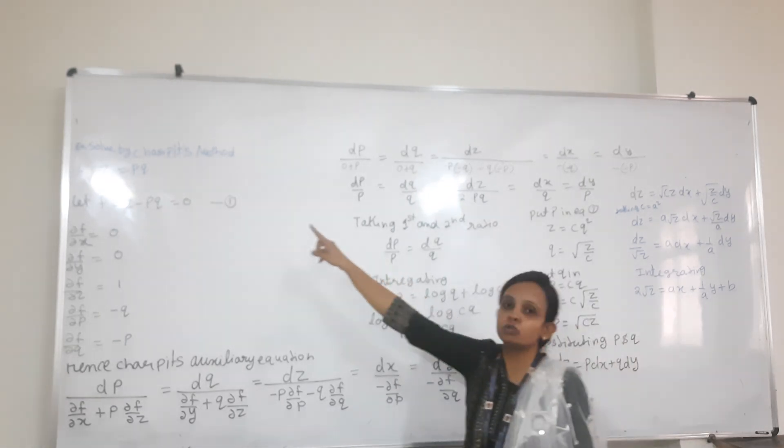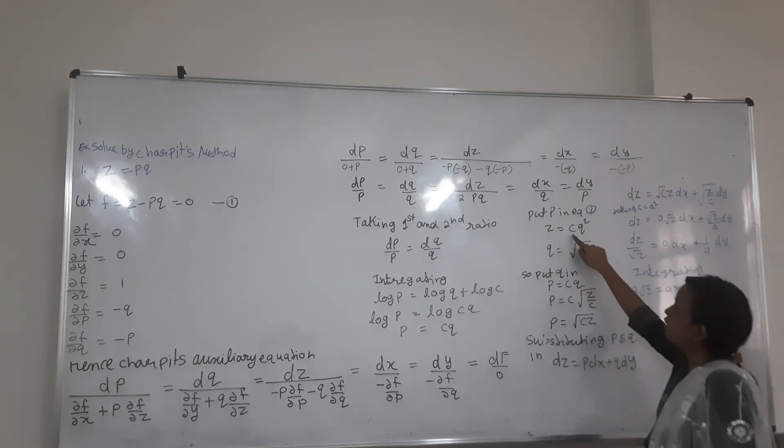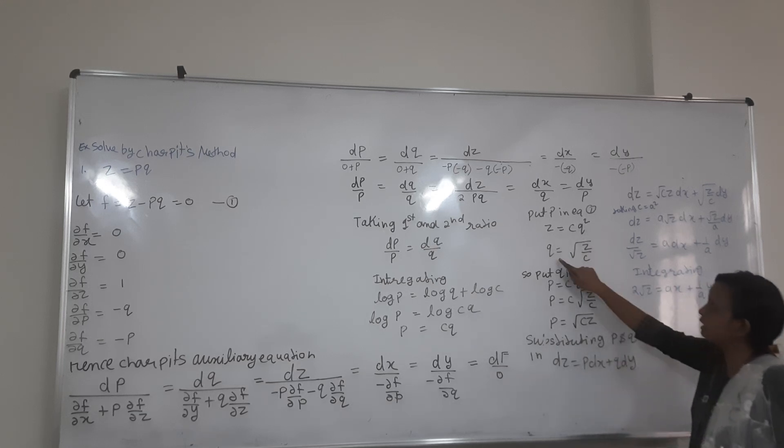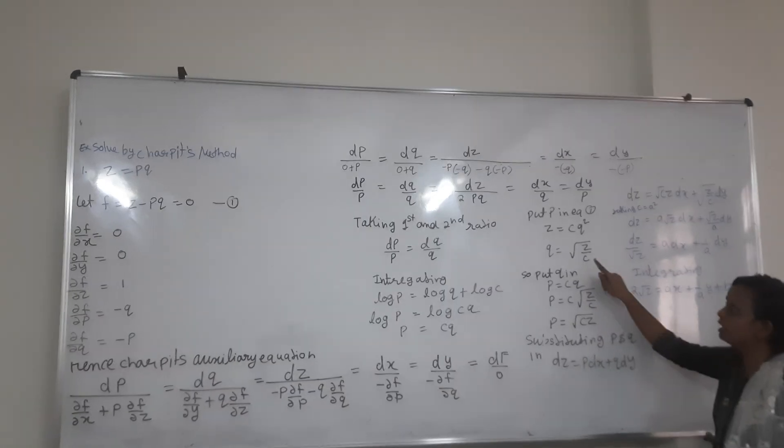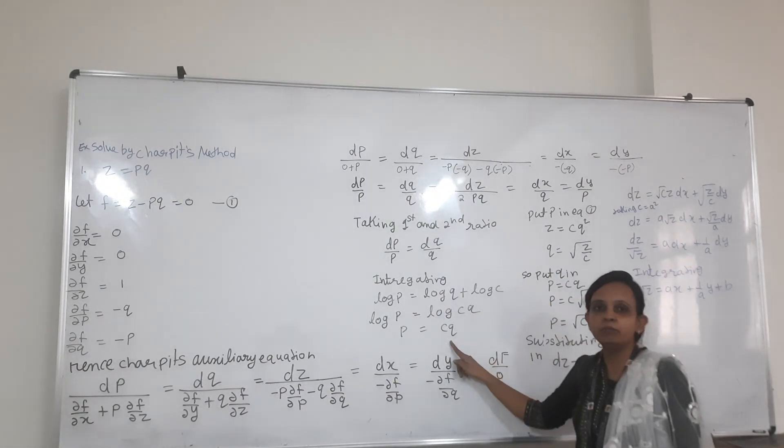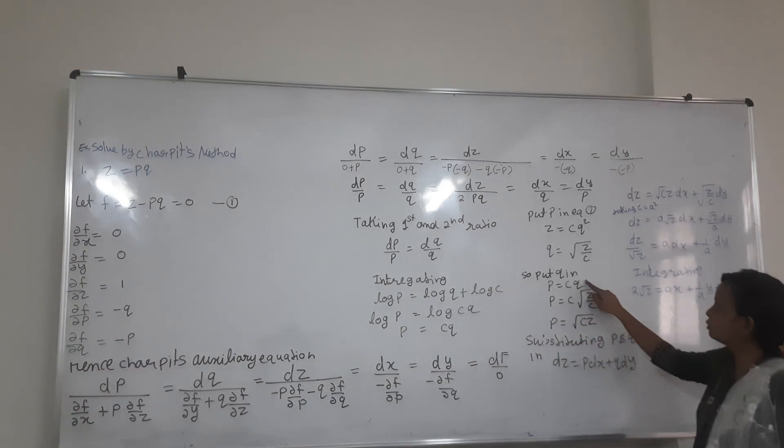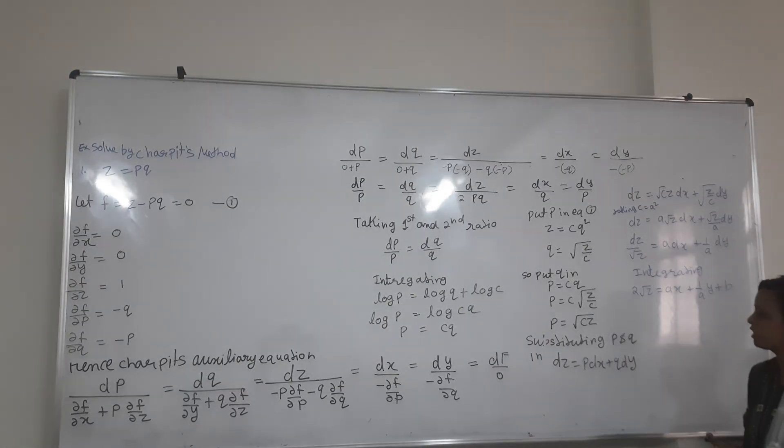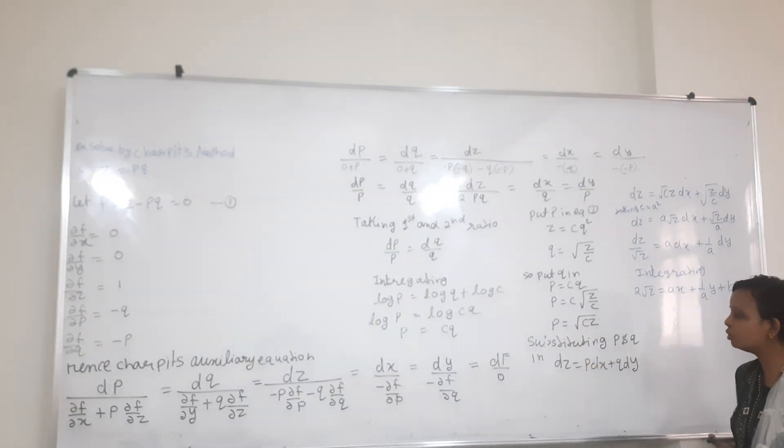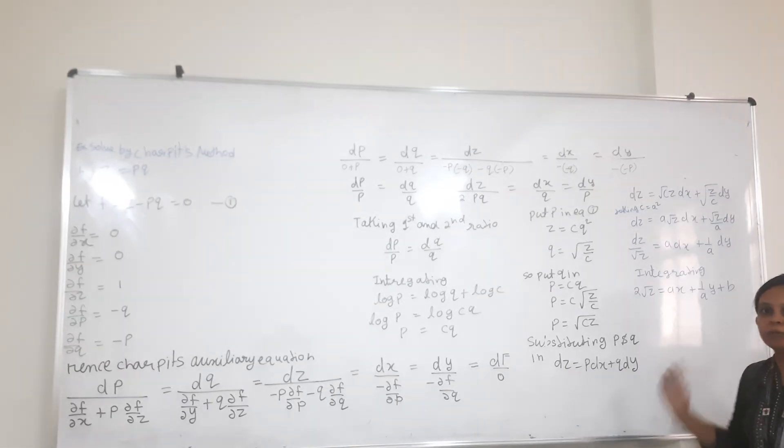Now this P equal to CQ, we have to substitute into the equation. So we have to substitute. Z equals what we have, P times Q equals CQ times Q, so CQ squared. Then Z equals C times Q squared.